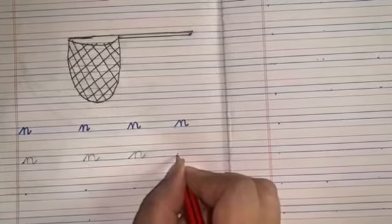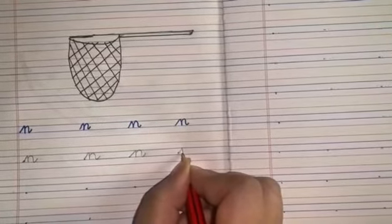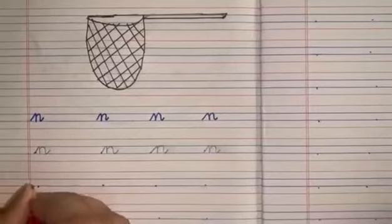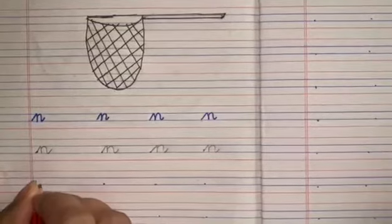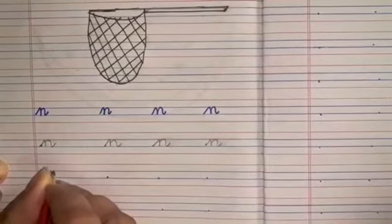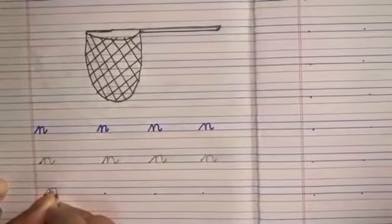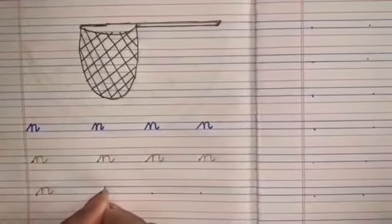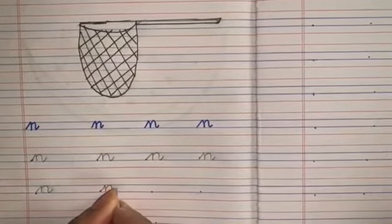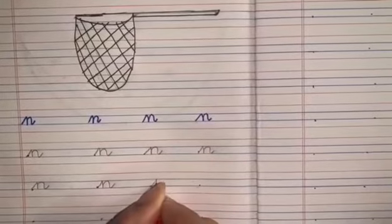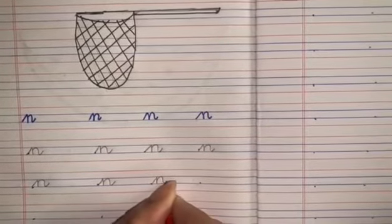Start from the second blue line, go up and down with a curve. Start from the second blue line, go slant to the first blue line. Come down to the second blue line, go up once again, make a curve, down to the second blue line, and a curved tail. Girls, be very neat in your work and write very slowly and neatly. Slant, straight line, a curve, and a curved tail.